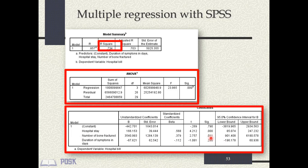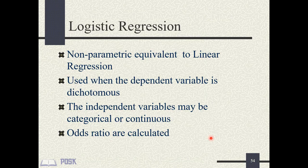Linear regressions are used when the dependent variable is continuous. But when the outcome is dichotomous, as is commonly obtained in the real world, you should use logistic regression. For example, survival can be dichotomized into dead or alive, and admission status into admitted versus discharged. These are situations where logistic regression is appropriate.